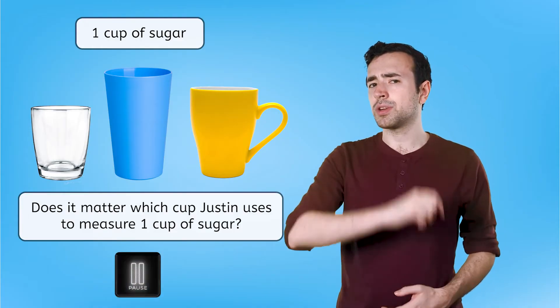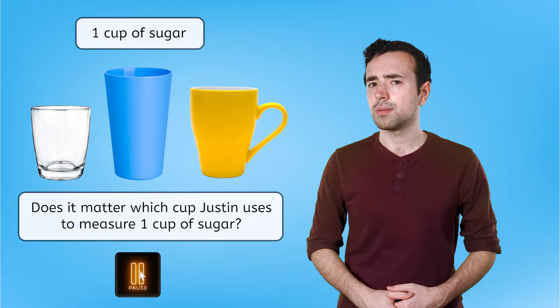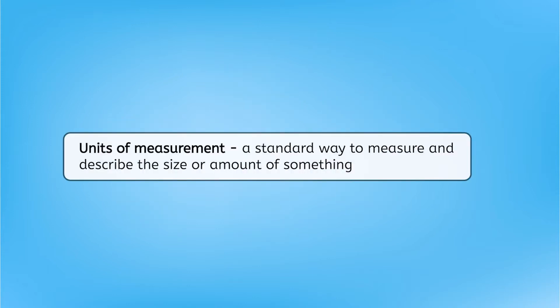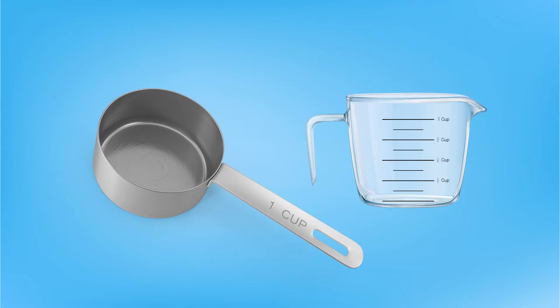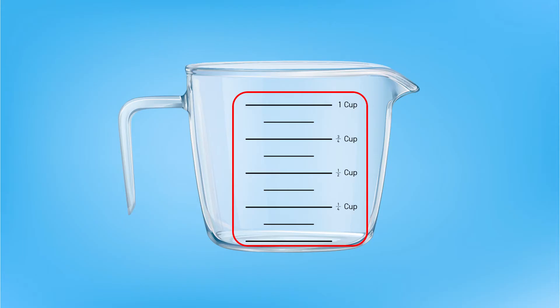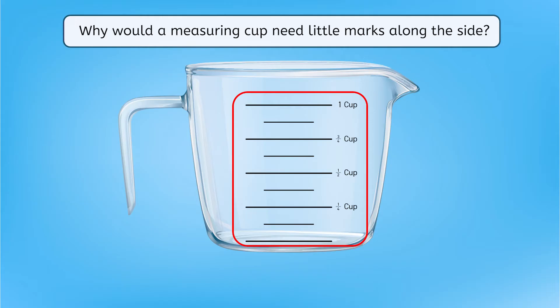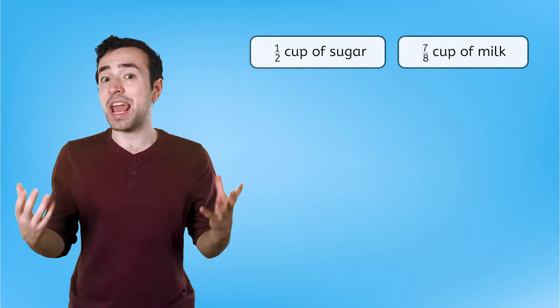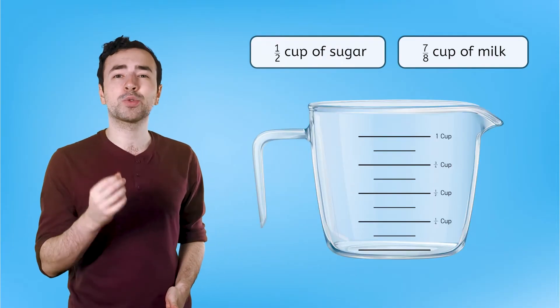Pause here to record your thinking in your guided notes. Different sized cups can hold different volumes. That's why units of measurement are important — they're a standard way to measure and describe the size or amount of something. When using a standard measuring cup, one cup will always be the same volume or amount. Notice how there are also little marks along the side of this measuring cup — it's divided into eight equal parts. Some recipes call for part of a whole cup, like one-half of a cup of sugar or seven-eighths of a cup of milk. These little marks can be helpful for measuring precise fractions.